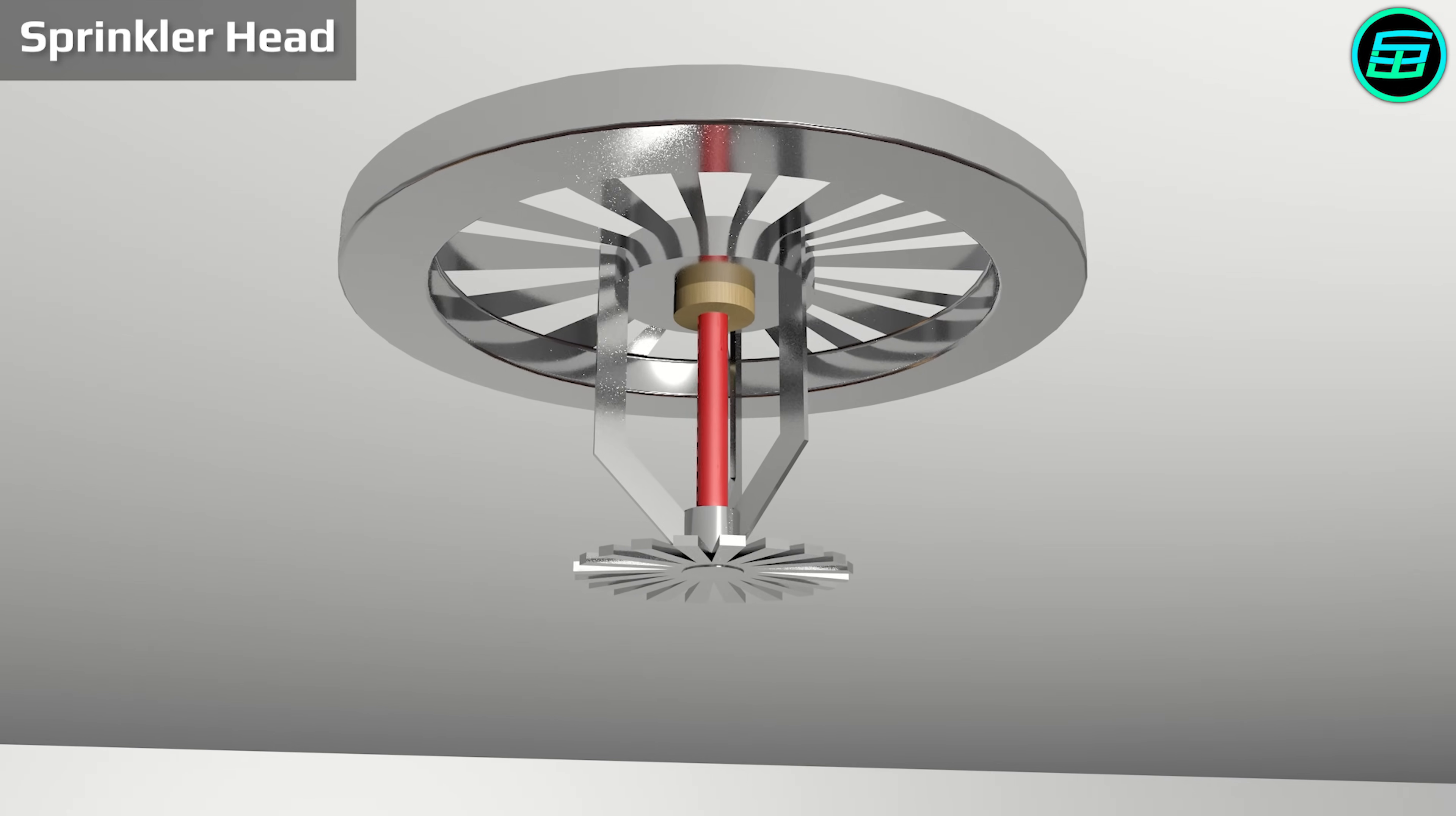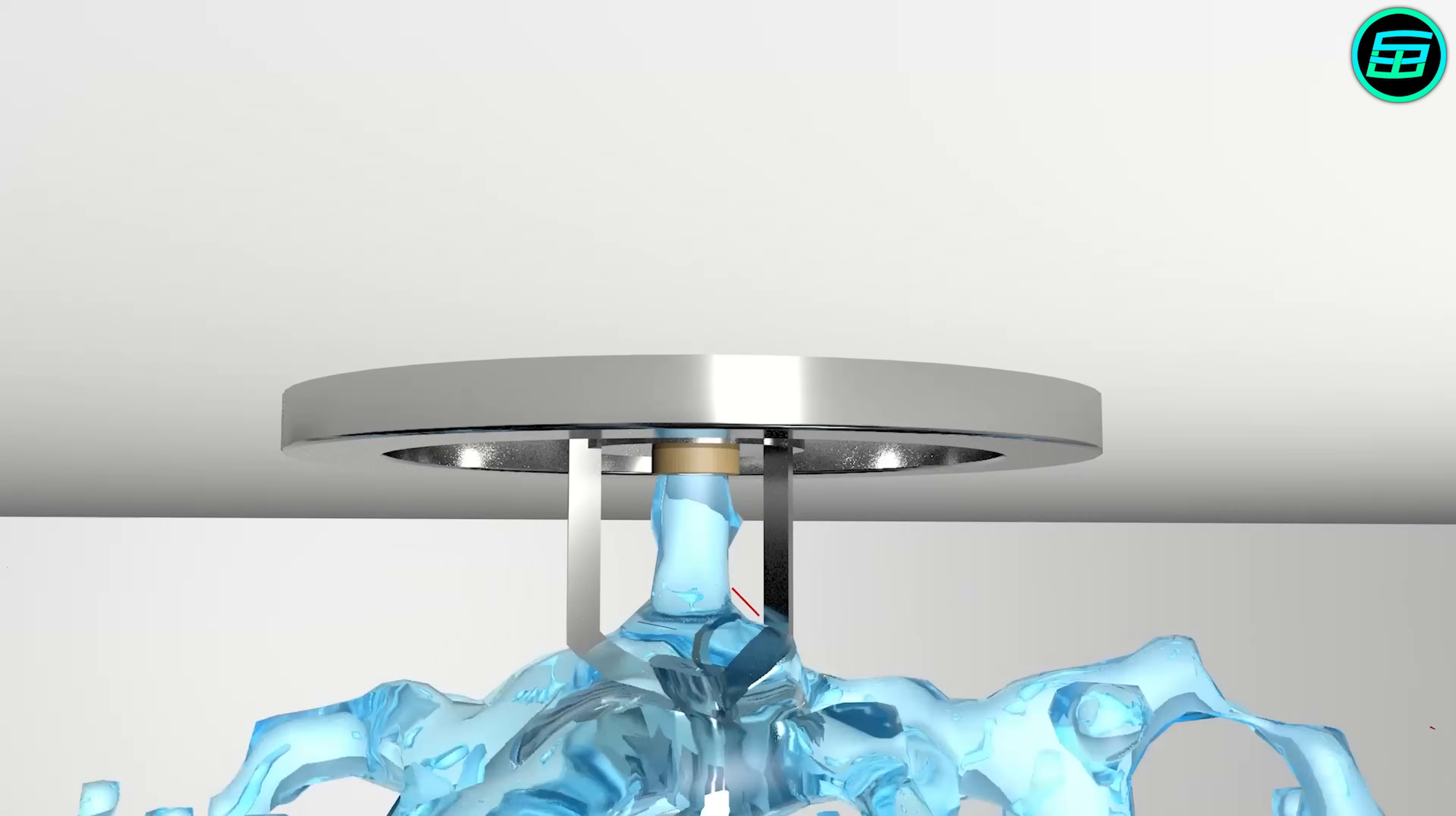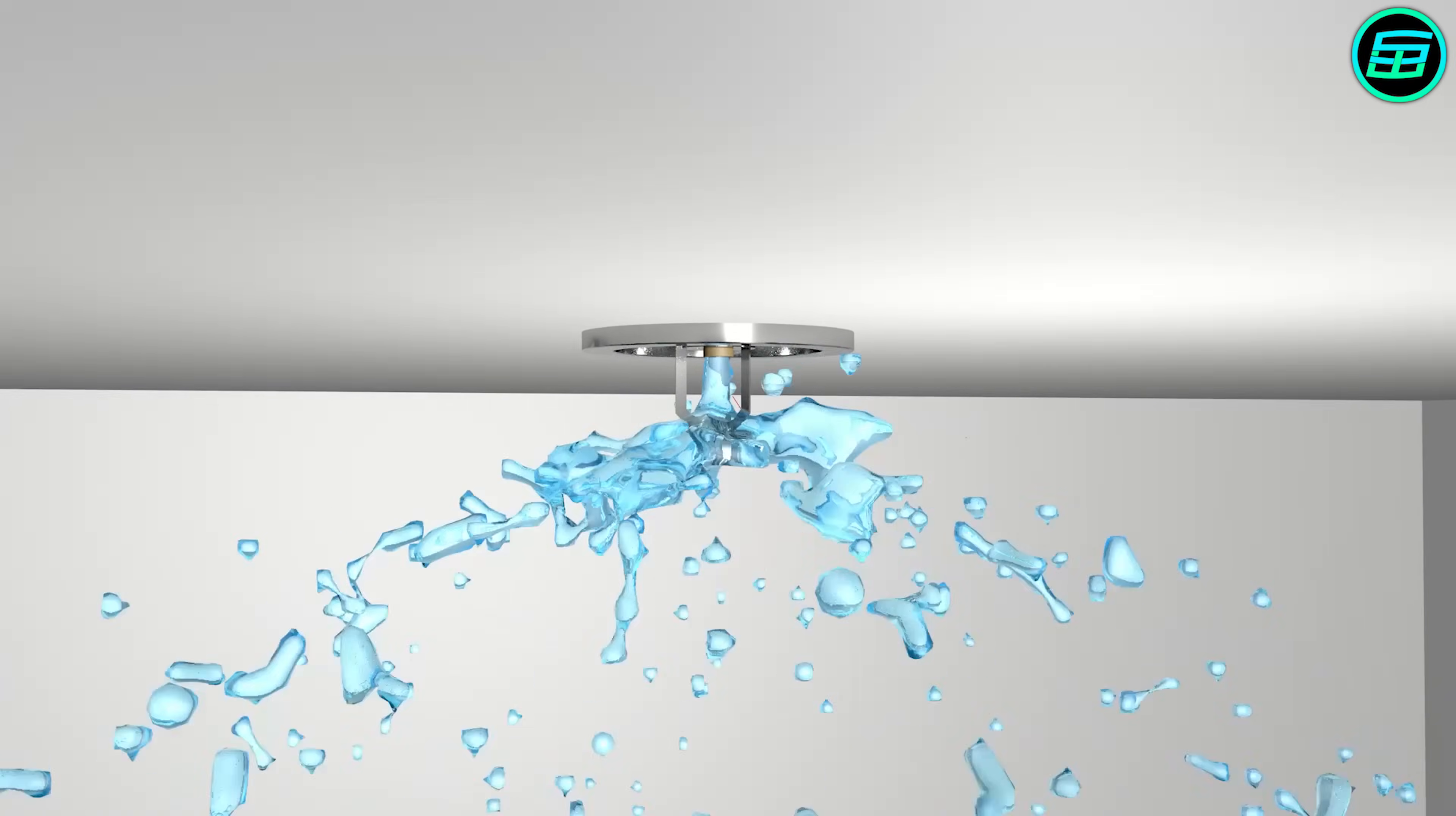When a fire starts, the temperature of the environment rises and the liquid in the glass bulb begins to expand. If the temperature continues to rise, the liquid expands so much that it breaks the glass. There's then nothing left to stop the water and it begins to come out from the plug. When water hits the sprinkler, it's spread over a larger area.